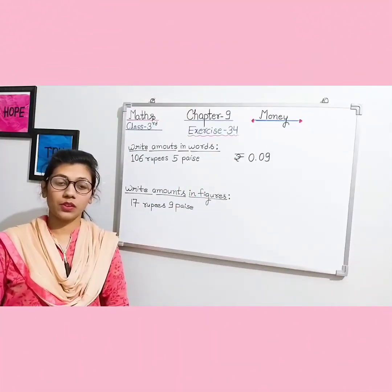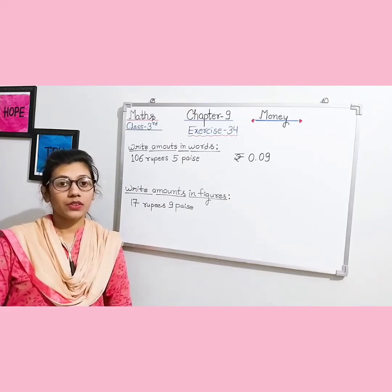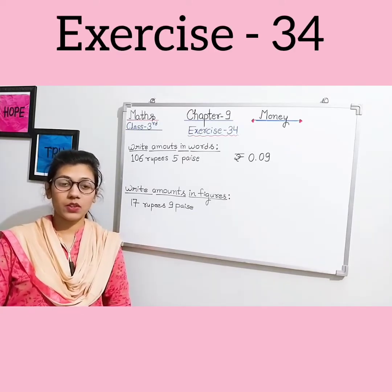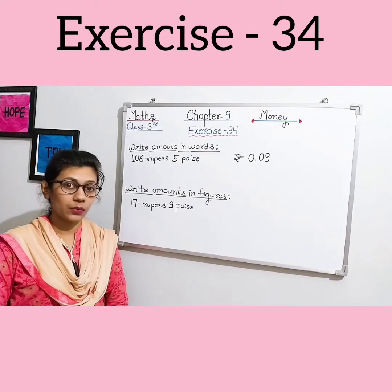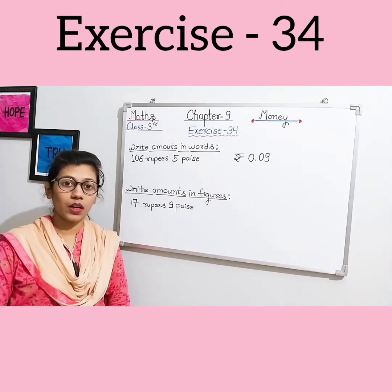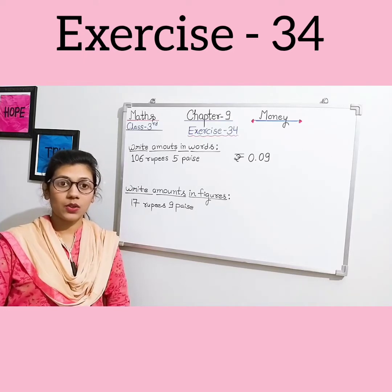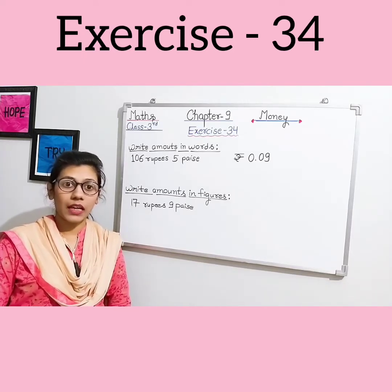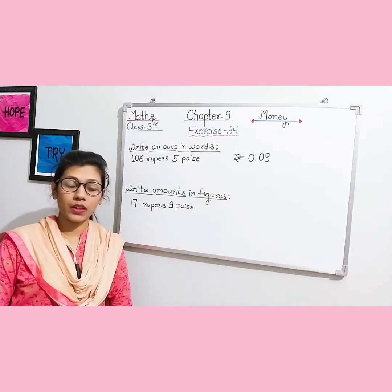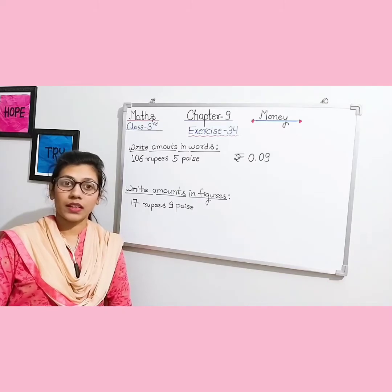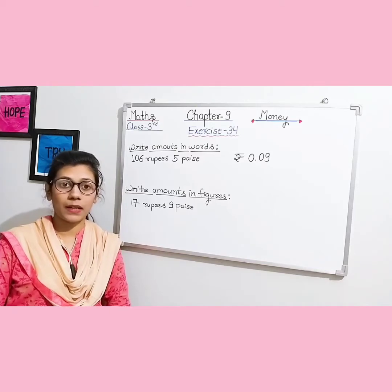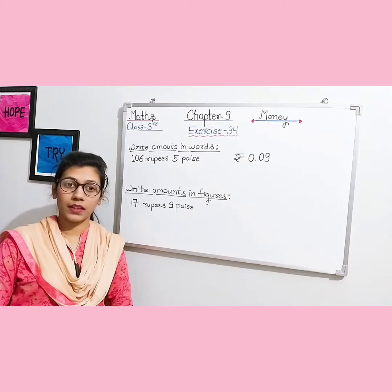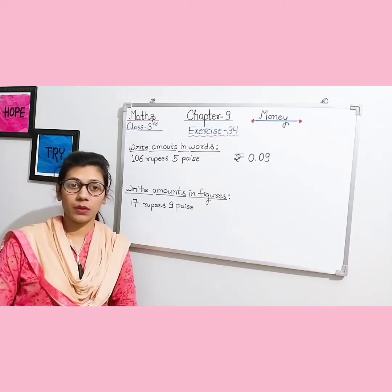Good morning dear students, welcome to your maths class. Today we continue the same chapter. In our previous session we started chapter number nine, 'Money'. We read exercise 3.4 and solved question numbers one, two, and three. The definition of money: the type of money used in a particular country is called its currency. We denote it in rupees and paise — rupees with the ₹ symbol, and 1 rupee equals 100 paise.